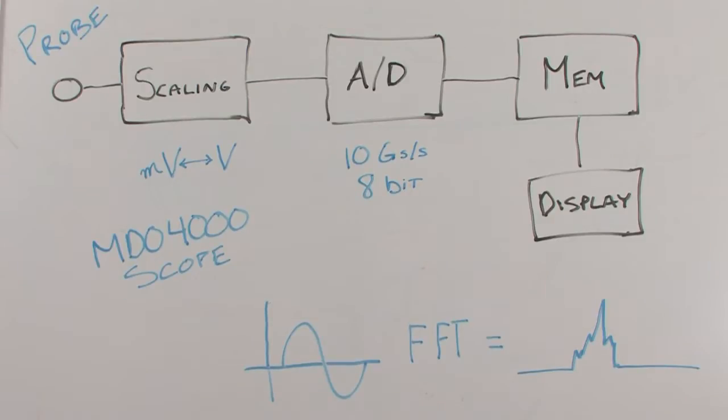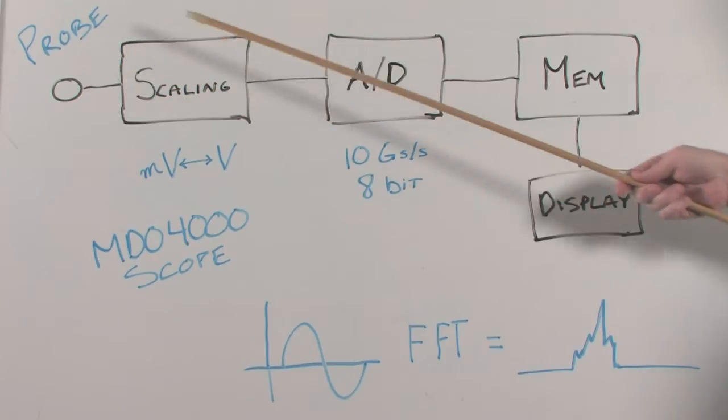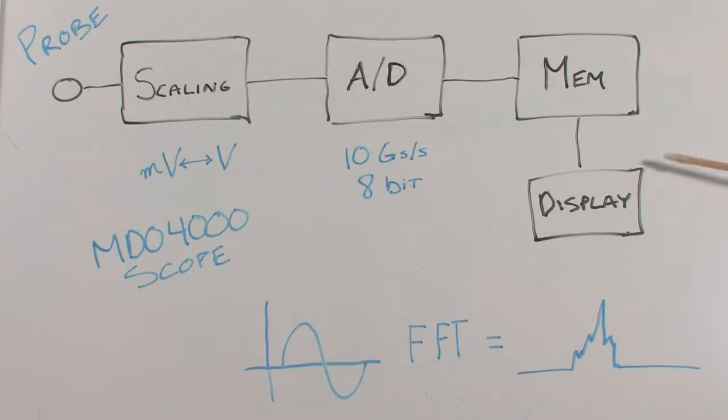Consider this block diagram of a basic scope. In simple terms, a scope is comprised of a probing system, digitizer, memory, and display.